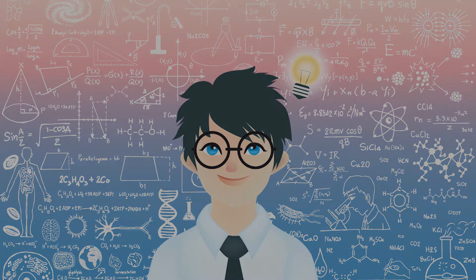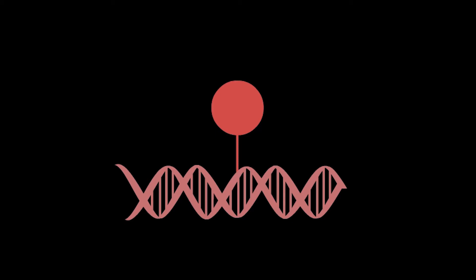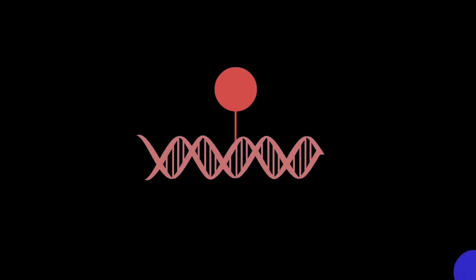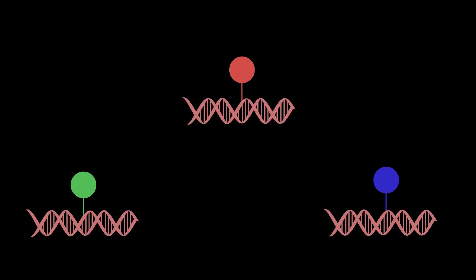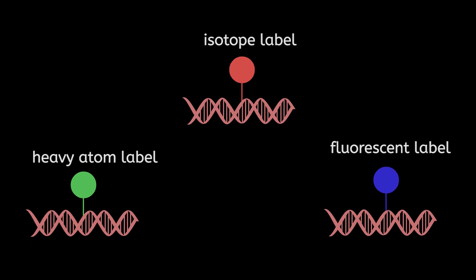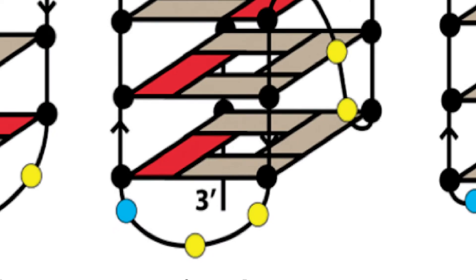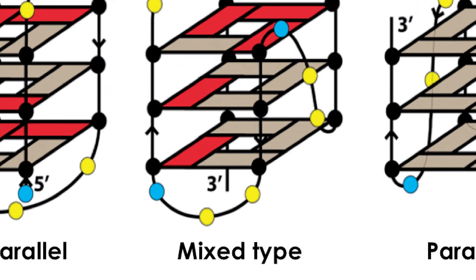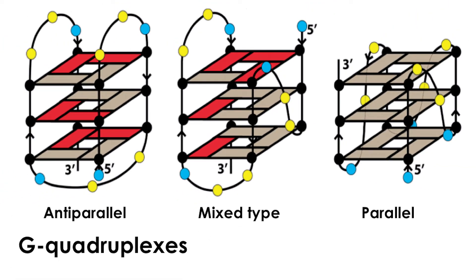But how does one see these structures? Science has got the trick. Scientists often attach a special tag to the molecule to visualize it, and they call it a probe. Several such probes have been used over the years to know more about G-quadruplex structures.